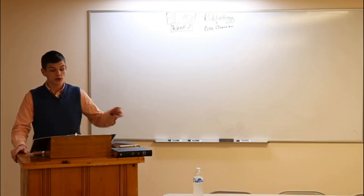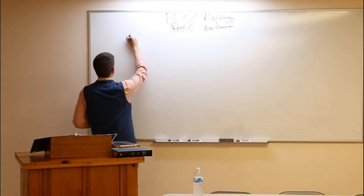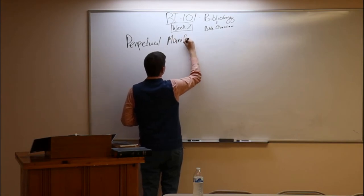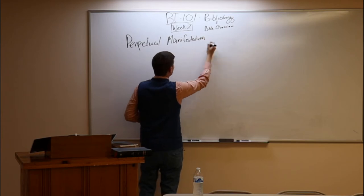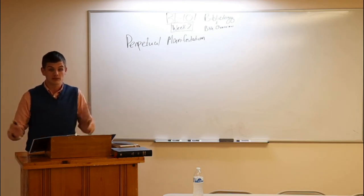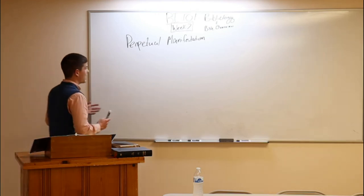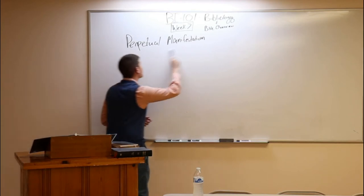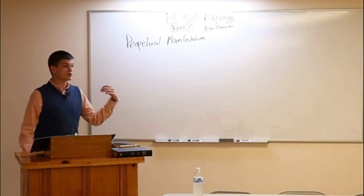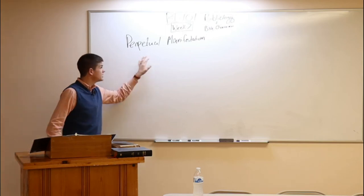Let me do a quick review of those principles of providential preservation from last week. The first is perpetual manifestation. This is a term I've coined, though the concept is age old: that God's people have always possessed the true Word of God, that the true books of the Bible and their canonical texts were never hidden away or unknown to God's people. The Bible perpetually manifests itself to God's people — not only is it preserved, but it's available. It might be in the sand in Alexandria or in a library waste bin — no. It's perpetually manifested.